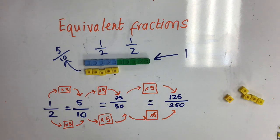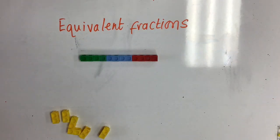Using that pattern, we can see that one half is equivalent to five tenths, which is equivalent to twenty-five fiftieths, which is equivalent to one hundred and twenty-five two hundred and fiftieths. Let's take a look at one more example.